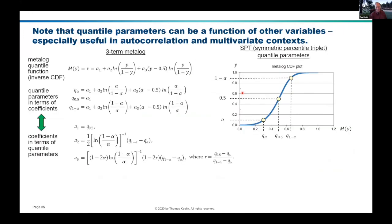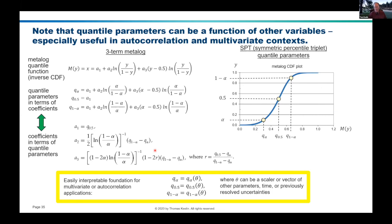The last key point I want to make is about even broader flexibility. As I mentioned, you have quantile parameters in terms of coefficients and coefficients in terms of quantile parameters — a closed-form relationship either way for all semi-bounded, bounded, and unbounded three-term metalogs. A key point that did come up in our previous conversation: what about autocorrelation? What if the shape of your distribution is evolving over time, depending on what has happened previously?